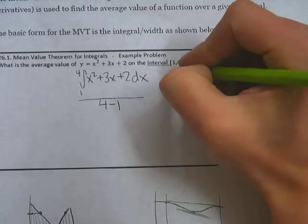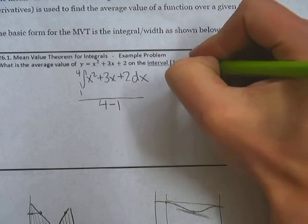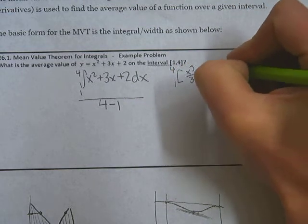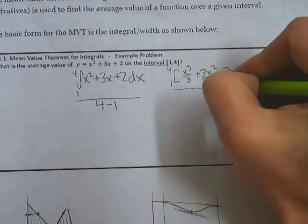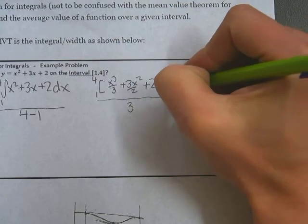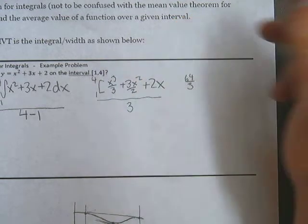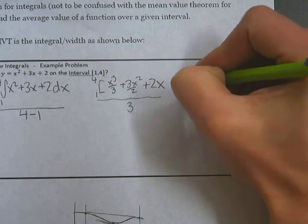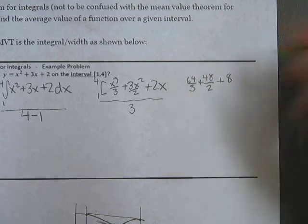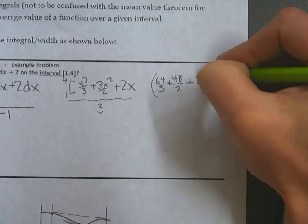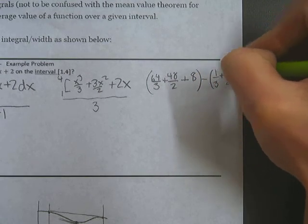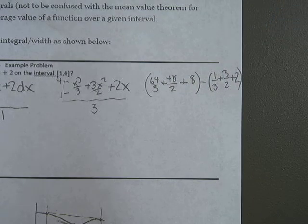So I'm going to continue solving this. I'm going to do the antiderivative. x cubed over 3 plus 3x squared over 2 plus 2x. And then we're going to divide that final answer by 3. Now I'm going to plug in the bounds. 4 cubed is 64. 4 squared is 16, so it would be 48 over 2 there. 3 times 16. 2 times 4 is 8. Cool. That's with 4 plugged in. Now with 1 plugged in, I get this is much easier: 1 third plus 3 halves plus 2.